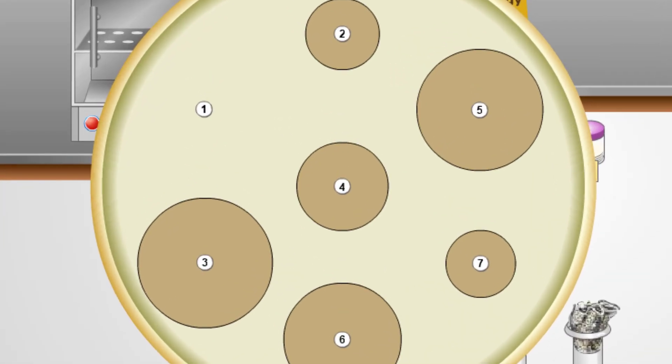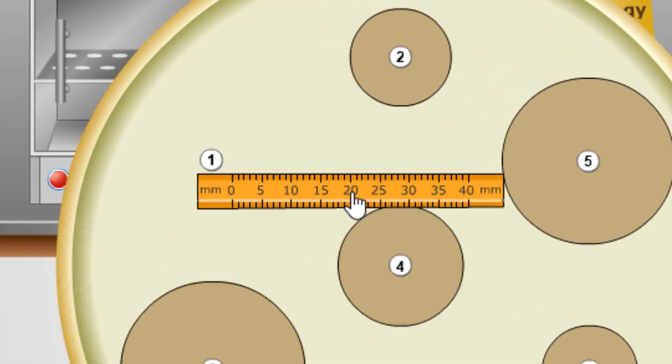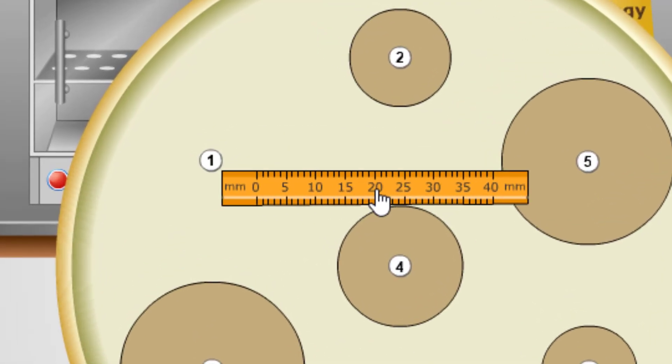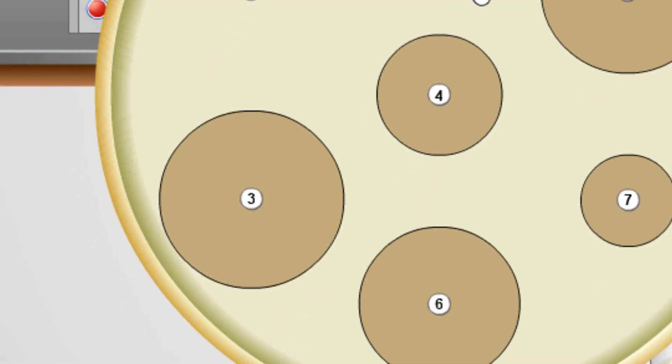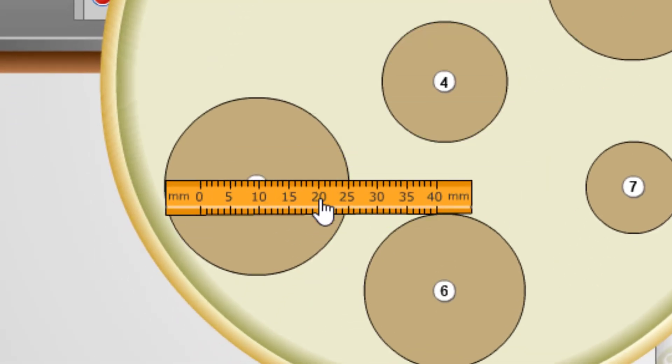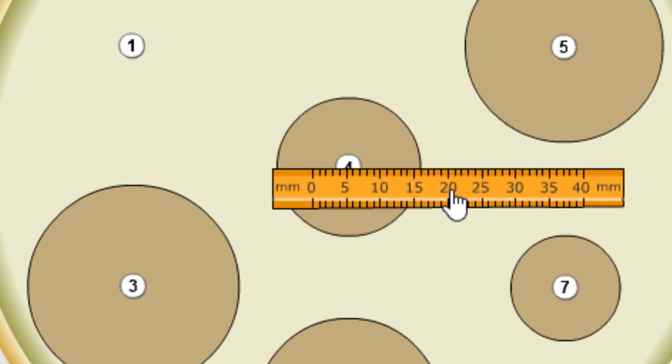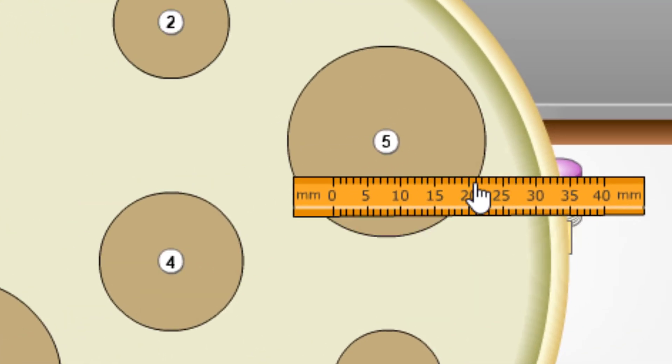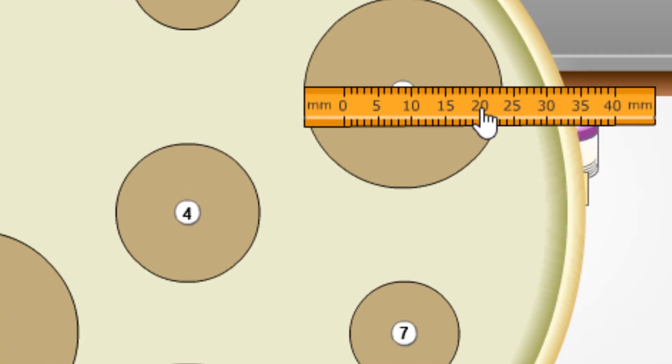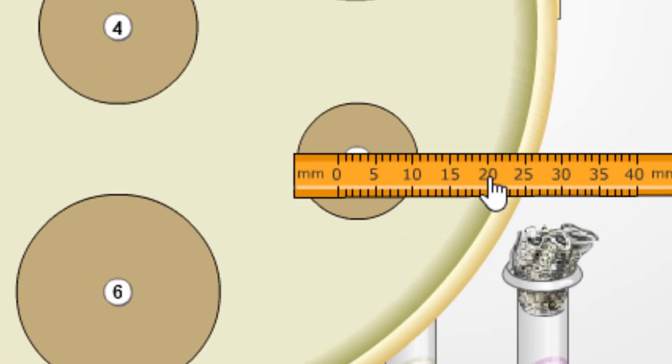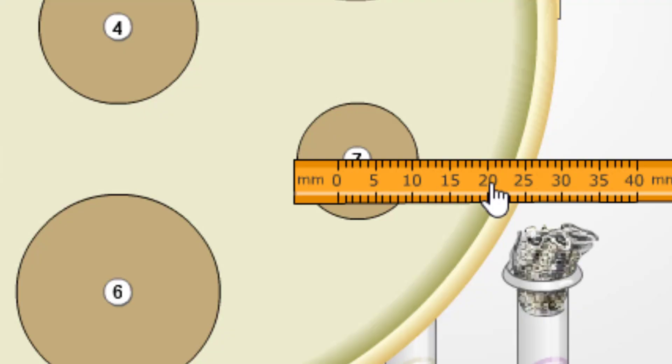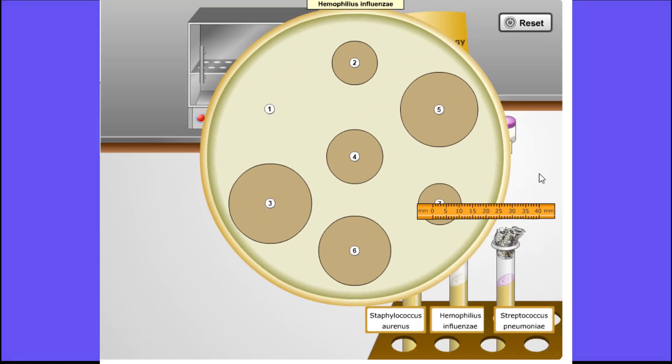Let's measure our zones of inhibition. Our control does not have a zone of inhibition, so this is good. Now that we have our zones of inhibition for each of the antimicrobial substances, we can try our last bacteria.